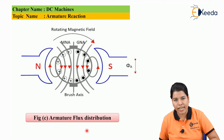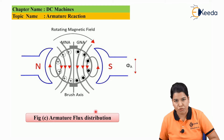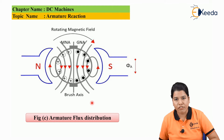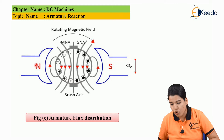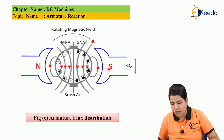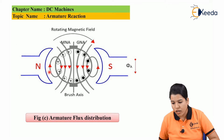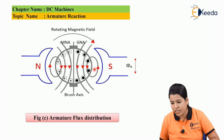Now consider figure C, which shows the armature flux distribution. In this case, only the armature is carrying the current and there is no current in the main field. We can see that the conductors shown with the cross sign come under the north pole, whereas the conductors shown with the dot sign come under the south pole. All the conductors which come under the north pole carry the same current, whereas all the conductors which come under the south pole carry the same current.